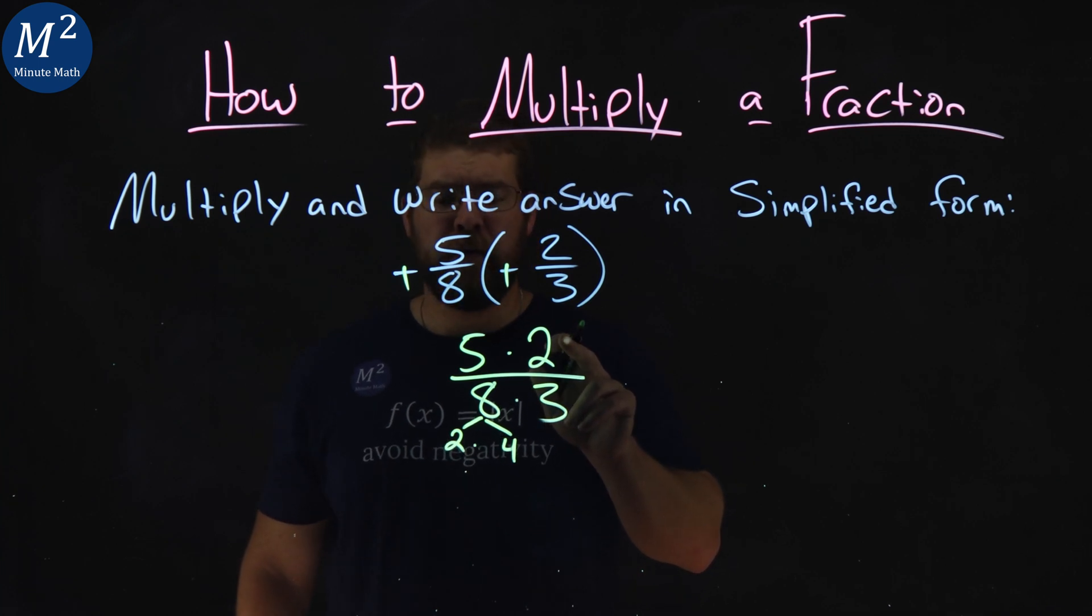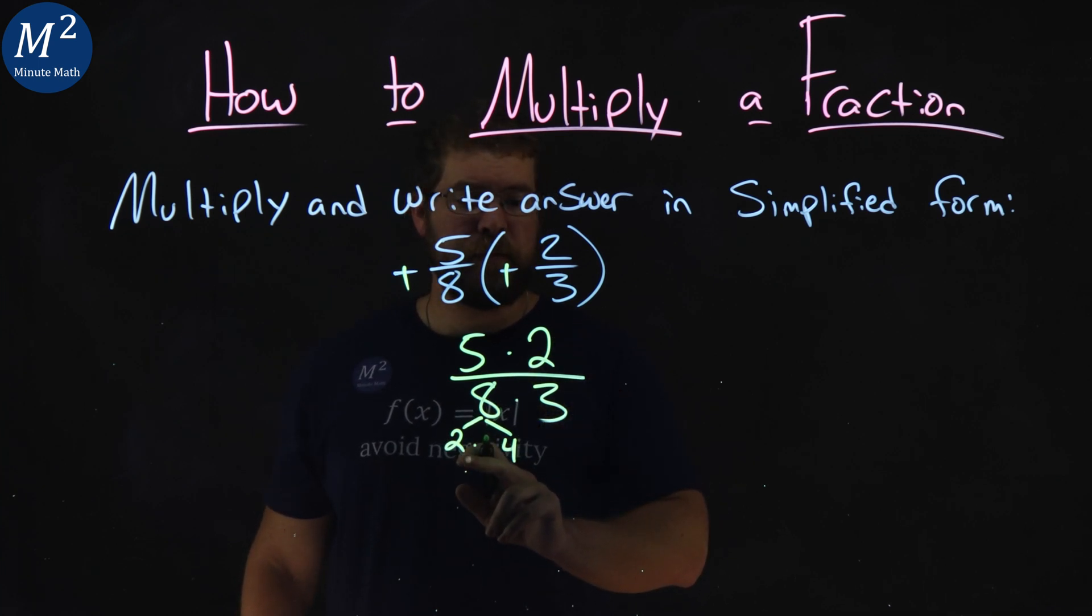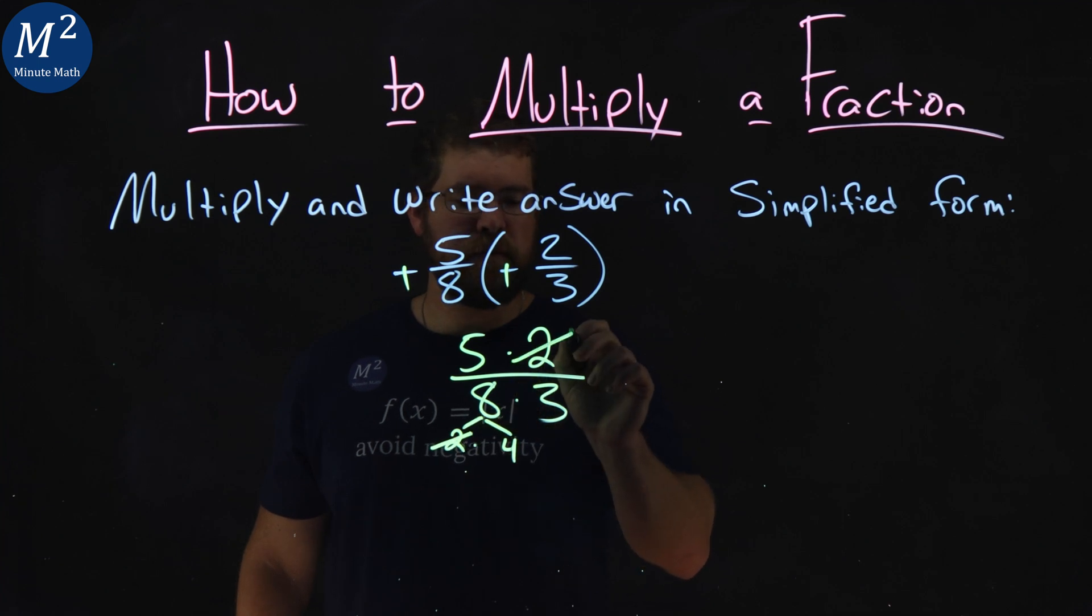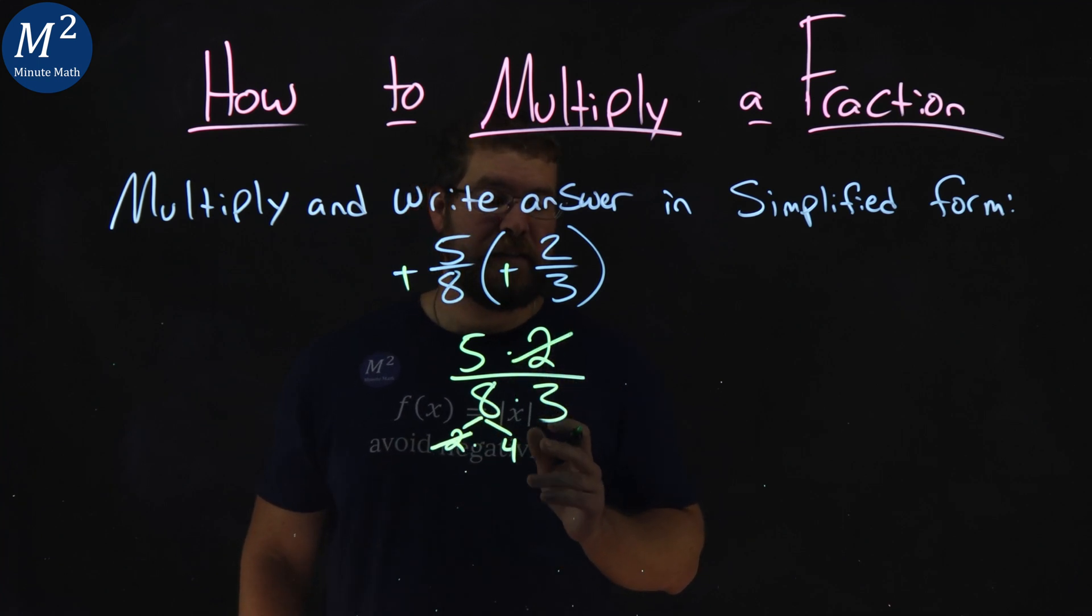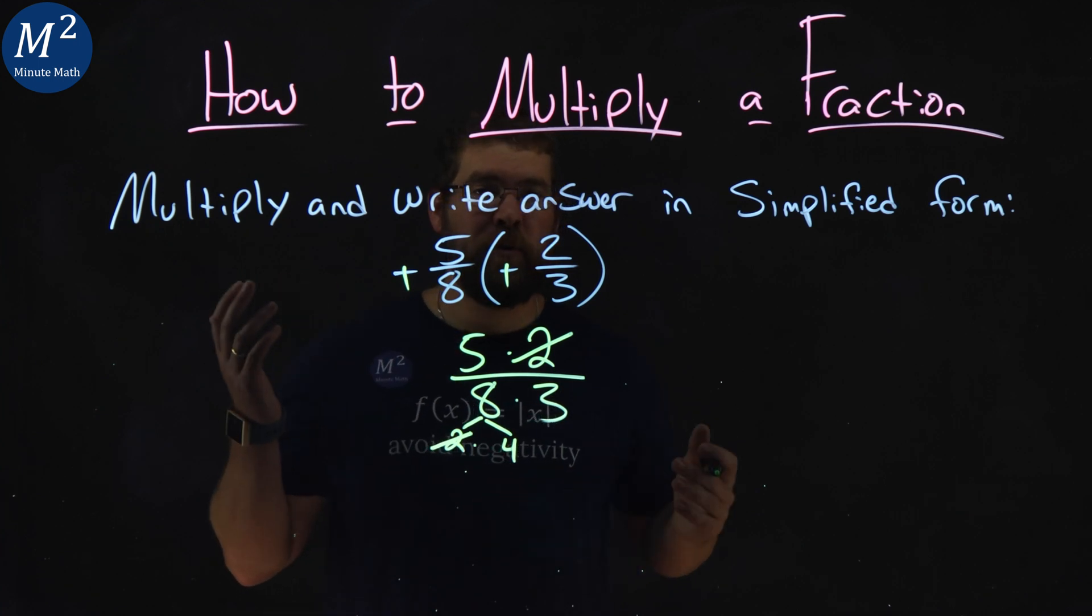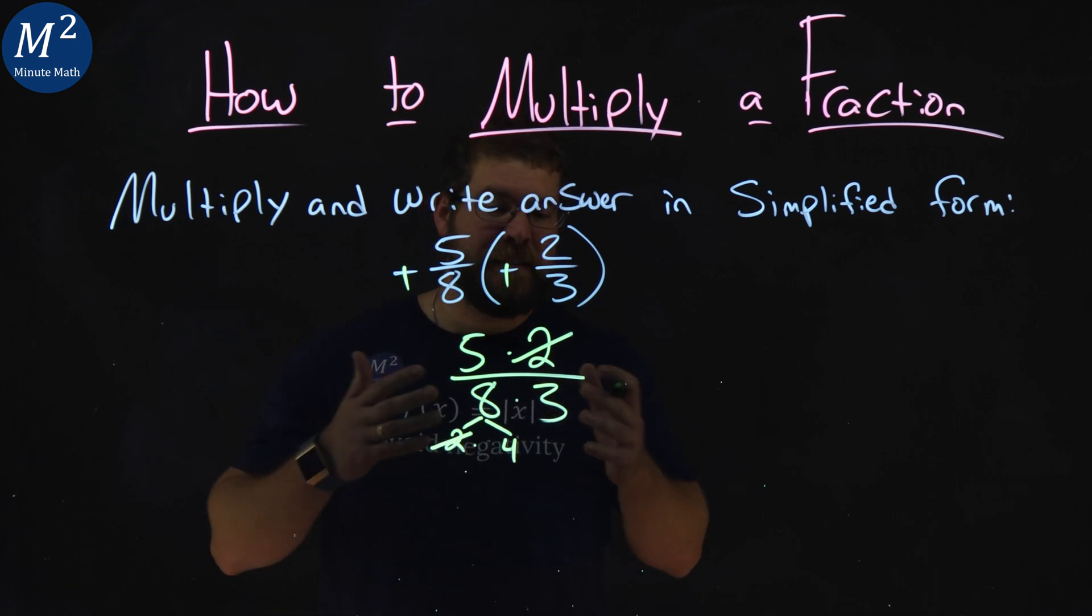Well, now I see a common factor: 2 and 2. Cross off the 2s, and there's nothing else really I see as a factor. I have 4 times 3 left in the denominator, 5 in the numerator. Nothing else really seems to cancel out.